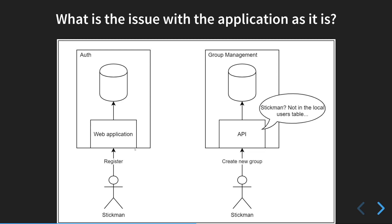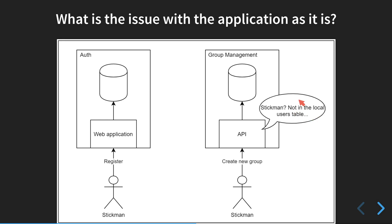So what happens when a user registers in the application is that there is account information stored in the auth database. But then, when the user tries to do something in the group management API — for instance, just create a new group — what happens is, inside the group management API, besides the group tables, we have a user table to know that the user exists. But because these are disconnected, the user is not in the local users table in the database, so the user cannot create a group.